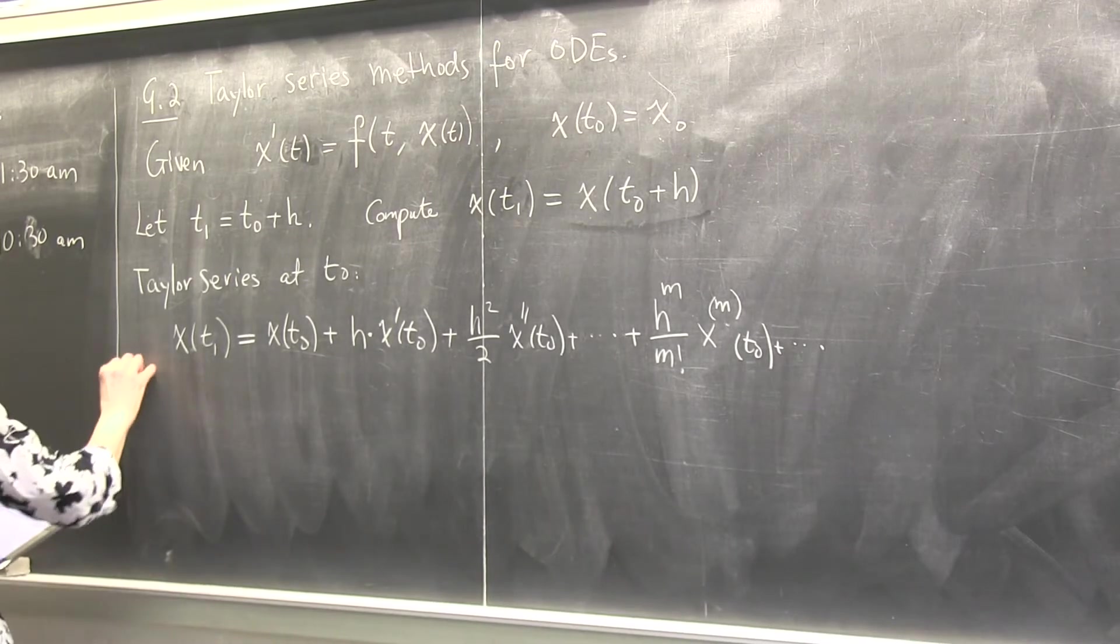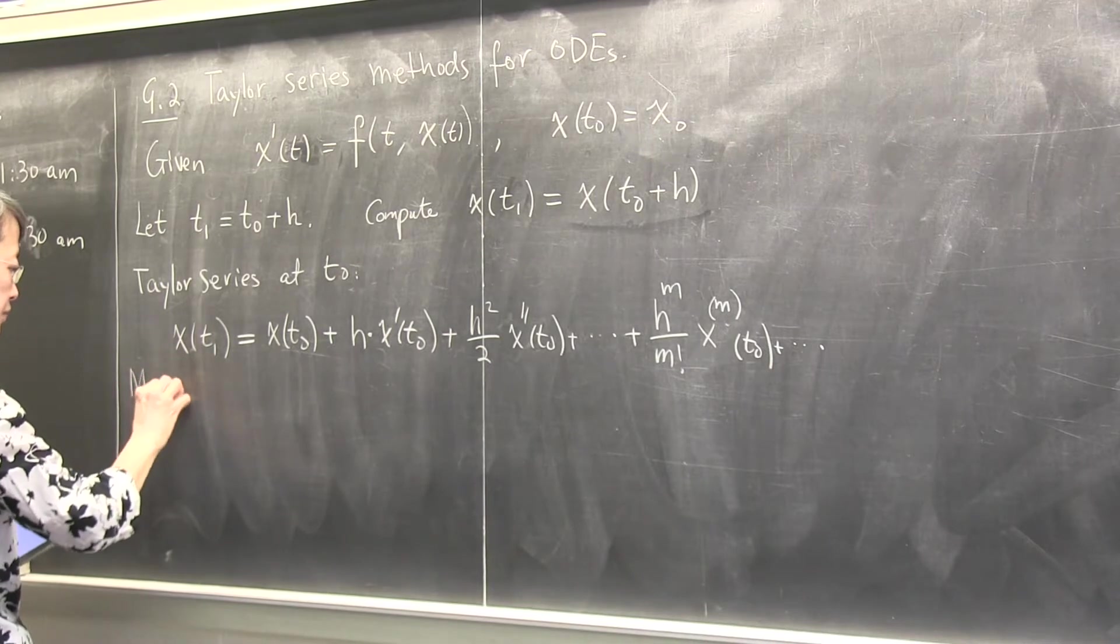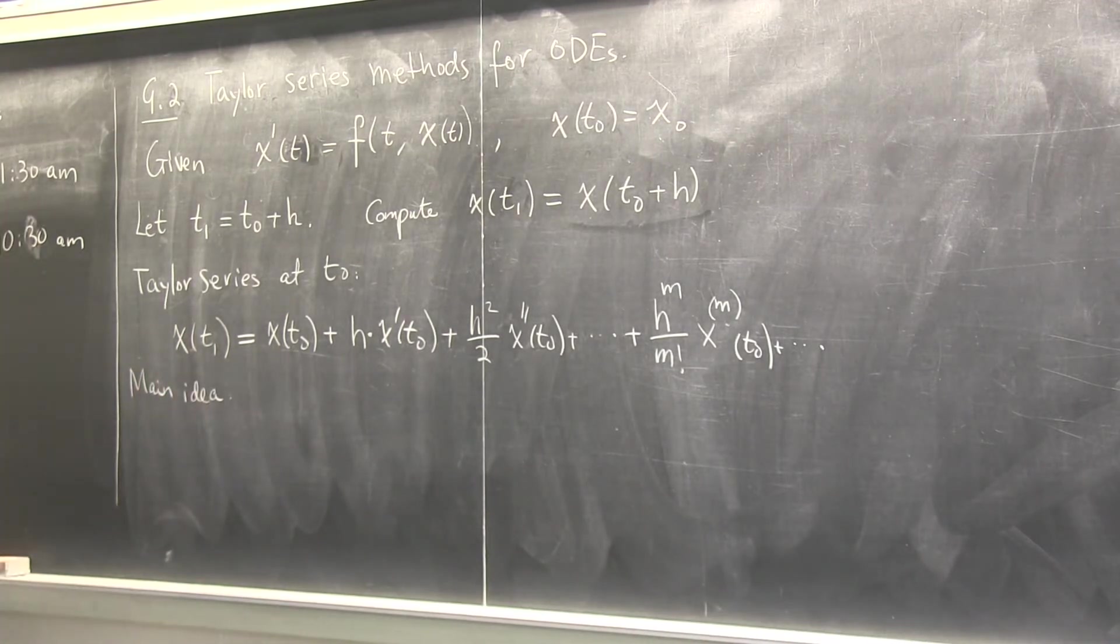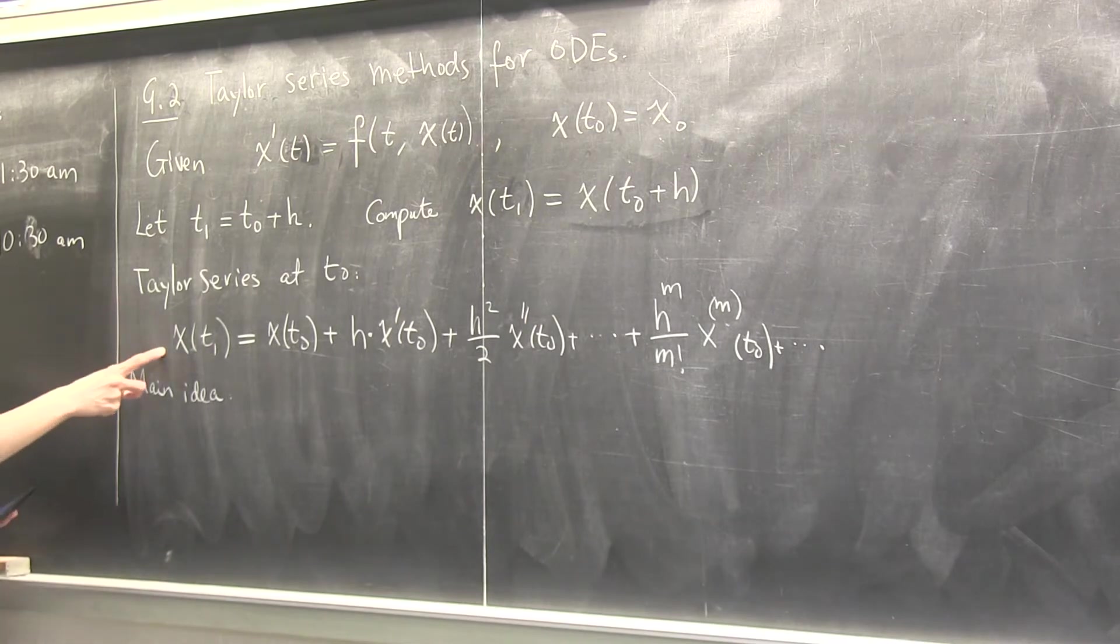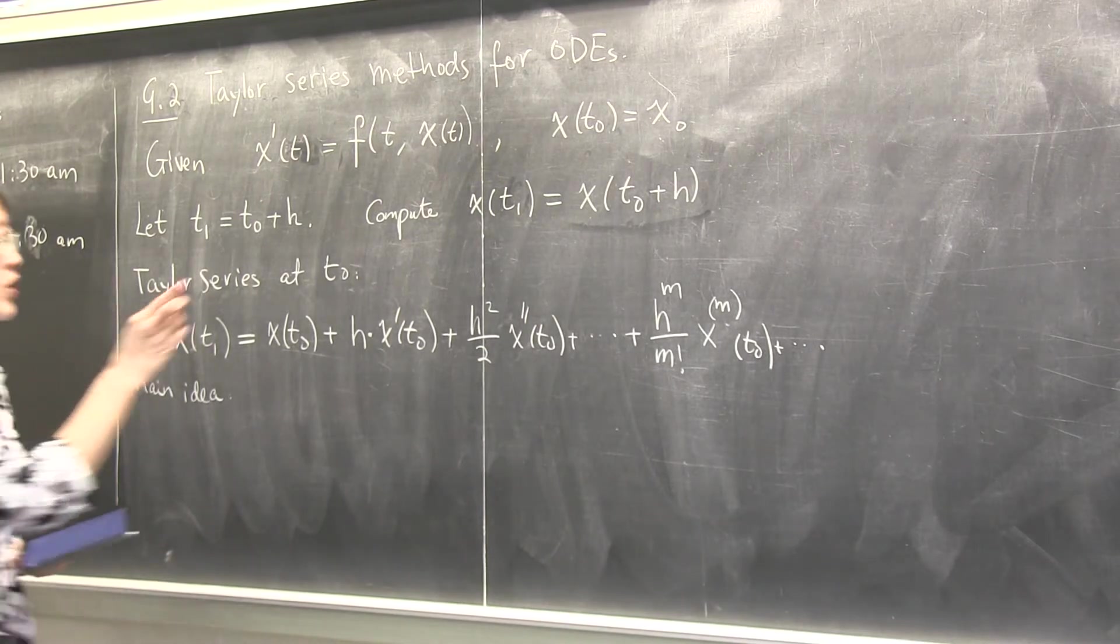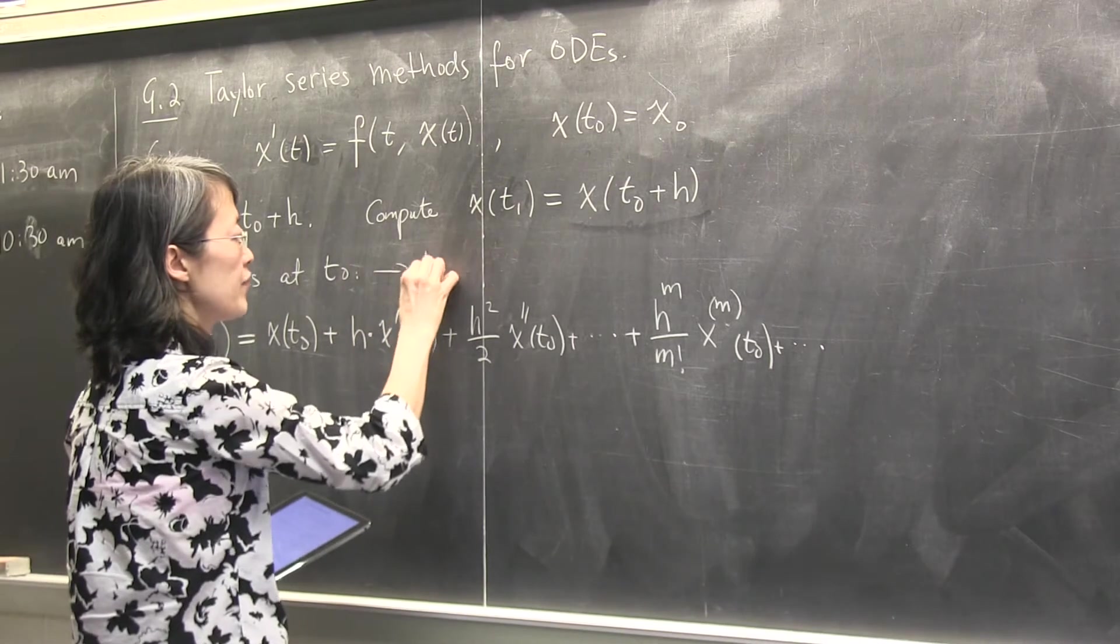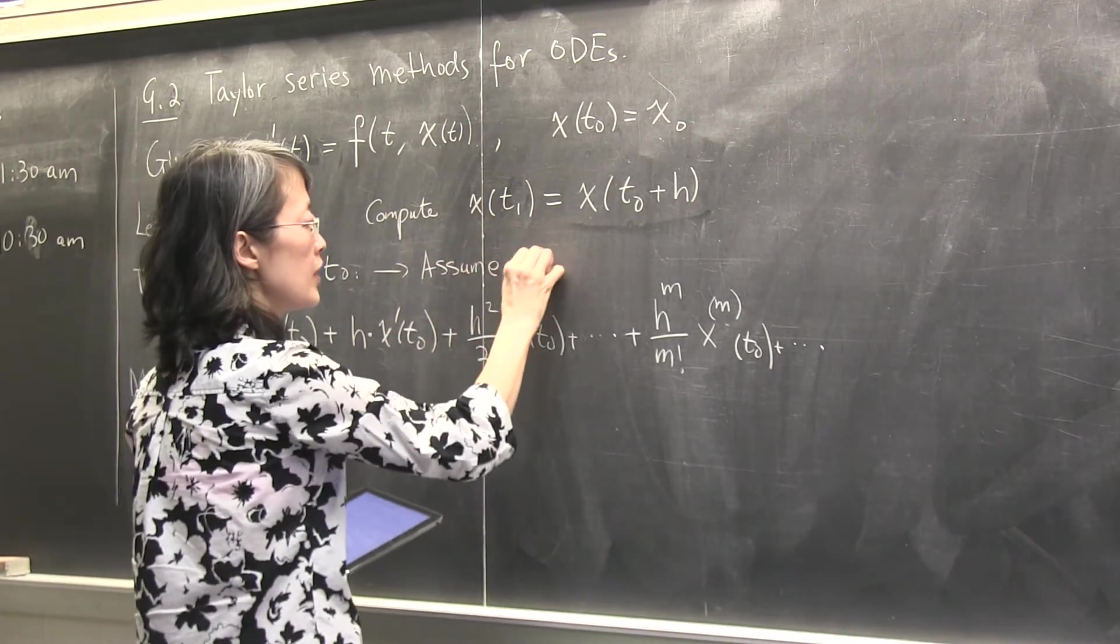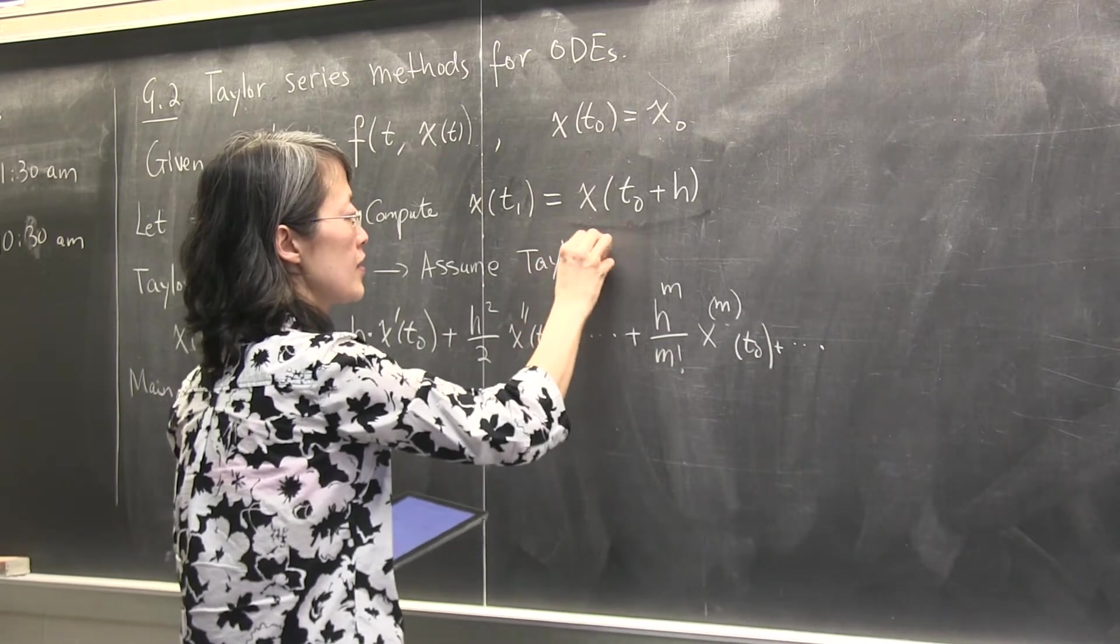x at t1 theoretically would equal to, if I expand this, I will have x t0. Do we remember the Taylor series? H times x prime at t0 plus h square over 2 x double prime t0 plus, and the general term is h to the m, m factorial x to the derivative m at t0. That's just Taylor series writing it out.